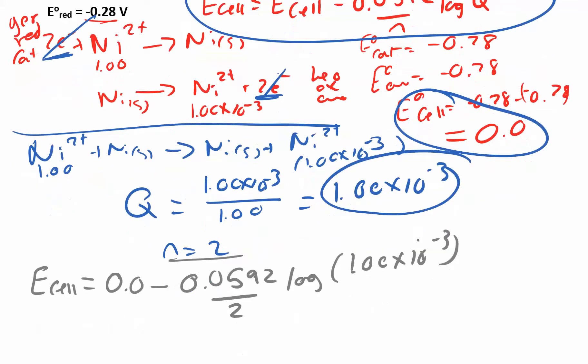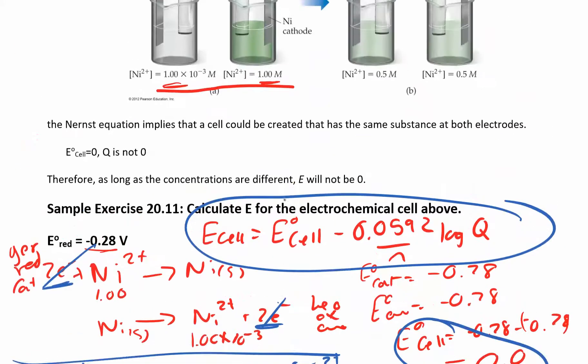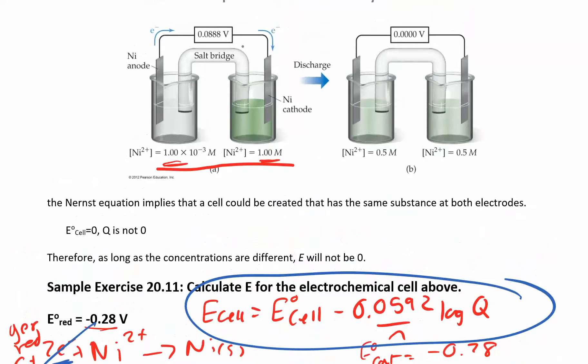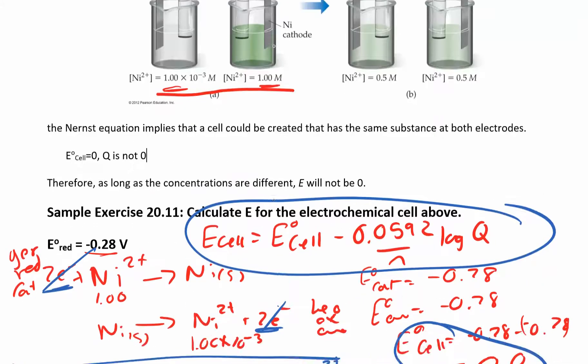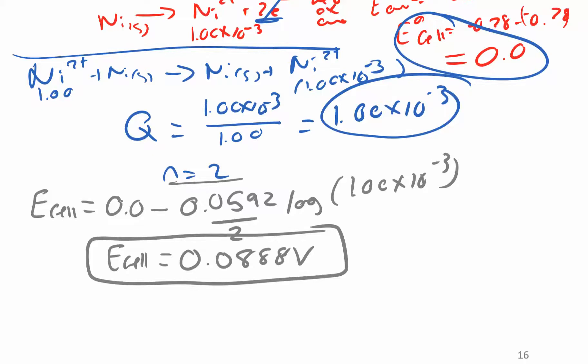So when you work all that out, you should get that your Ecell, again, this is Ecell, under non-standard conditions is positive. It's 0.0888 volts, which you'll notice it's actually given to you in the figure at the end. All right, right there, you have 0.088. I don't always give you the answers, but when I do, I hide them in the figure. So there you go.